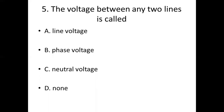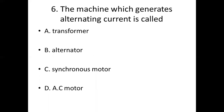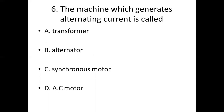Sixth bit. The machine which generates alternating current is called. Option A: Transformer. Option B: Alternator. Option C: Asynchronous motor. Option D: AC motor. Answer: Option B. Alternator.